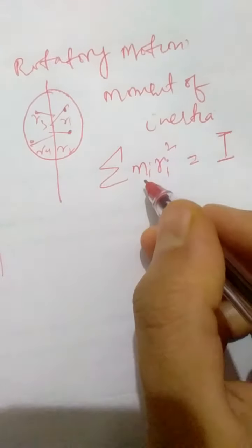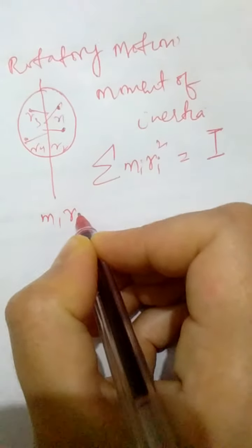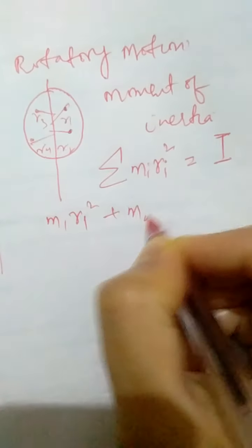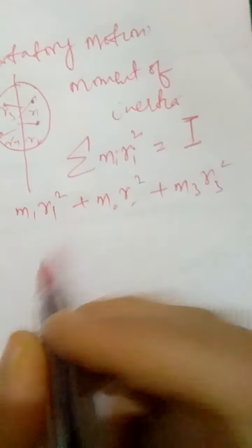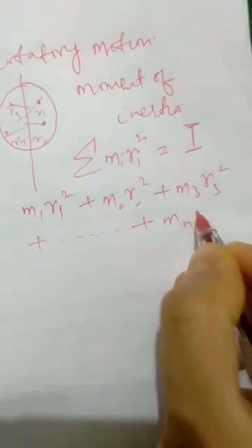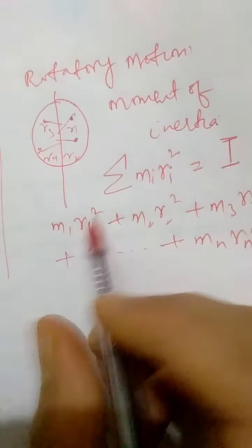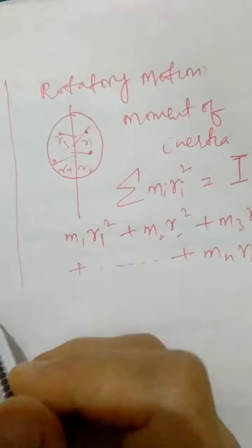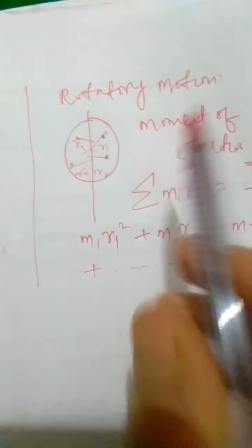By this summation m_i r_i squared, I mean it is the sum total: m1 r1 squared plus m2 r2 squared plus m3 r3 squared, and so on up to the nth particle. The sum total of all these moments is called moment of inertia. In case of rotatory motion, it is more useful and beneficial to use the concept of moment of inertia than mass.